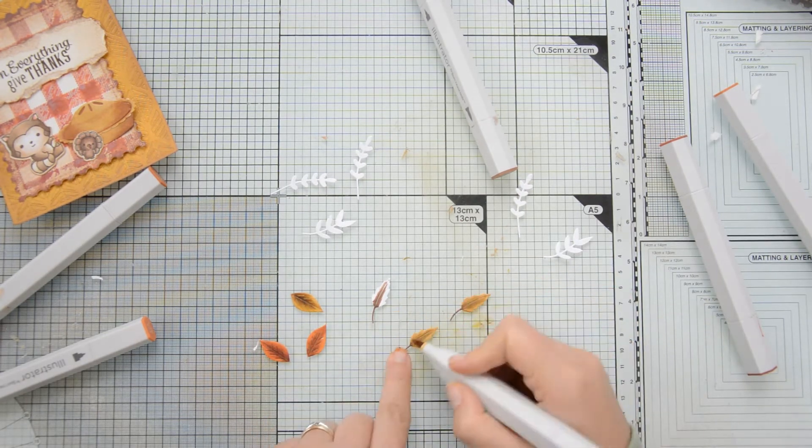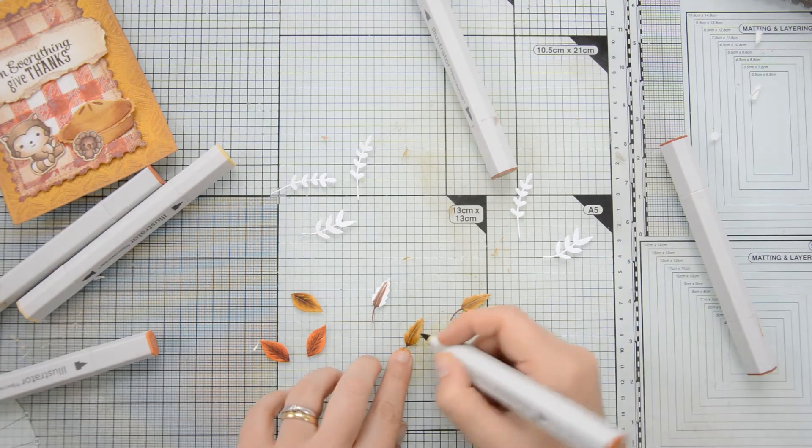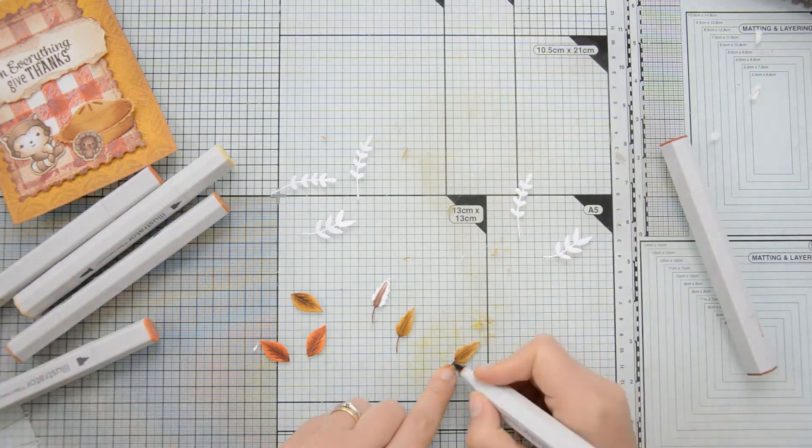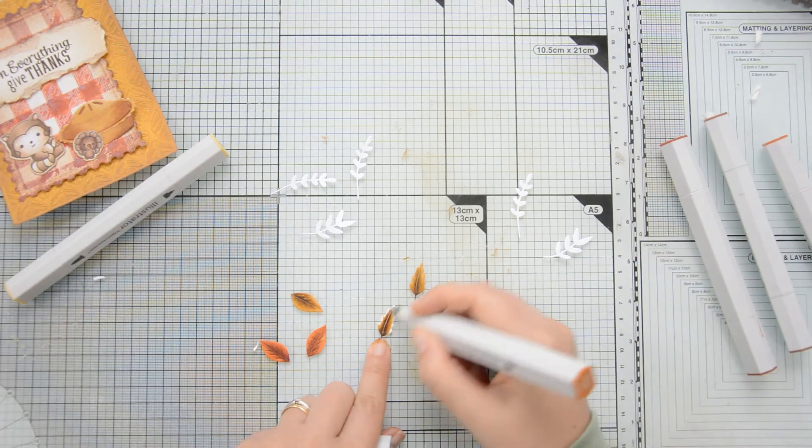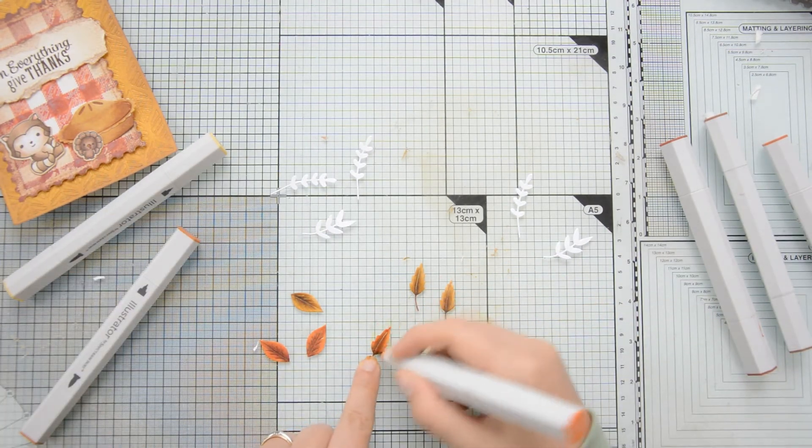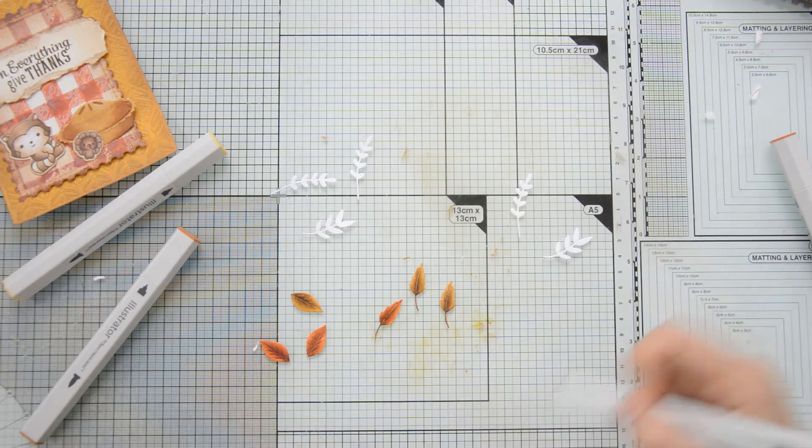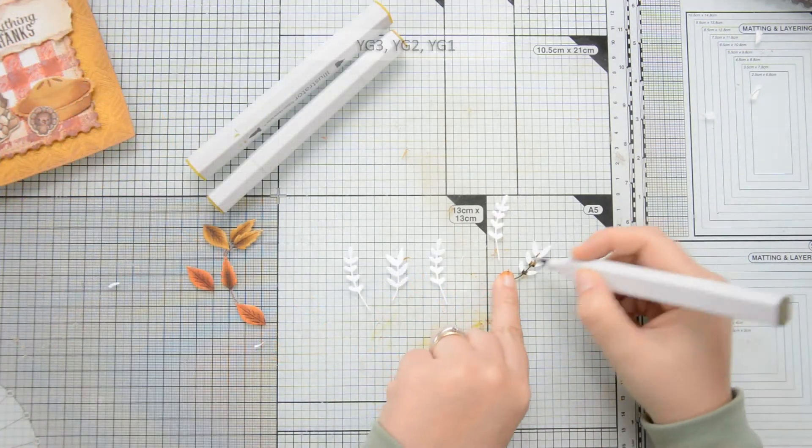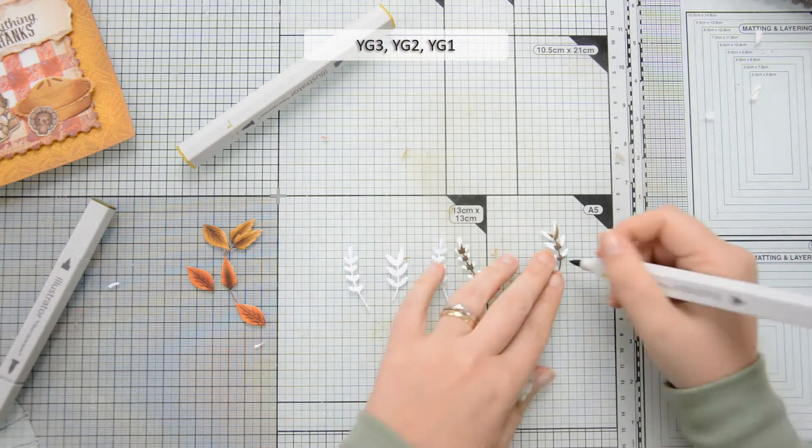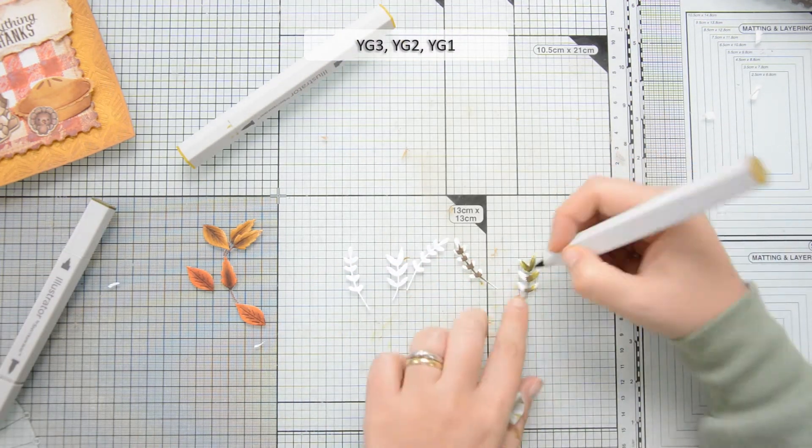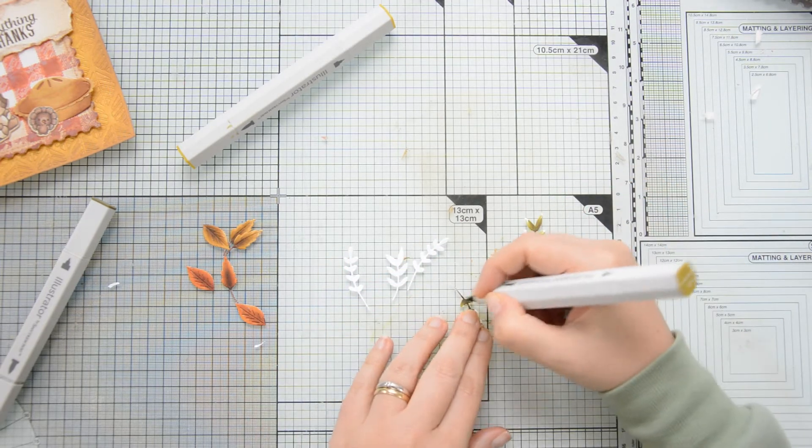I used two color combinations for the leaves, they are EB4, TN7 and BO3 and EB3, GB6 and GB3. And then for those branches up there that I'm about to color I used YG3, YG2 and YG1.